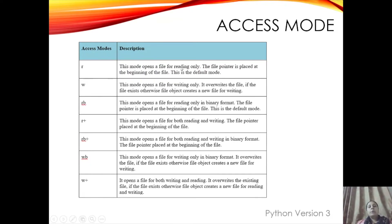In read mode you can open the file for reading only, and the file pointer is placed at the beginning of the file. In write mode, this is mainly used for writing data into the file and it mainly overrides the file — it replaces the existing data with new data. Write mode is mainly used for new files. Read mode is mainly used for existing files. 'rb' means binary read mode, 'wb' means writing in binary format files.